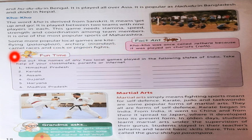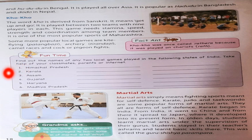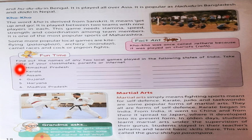Now the fun time. Find out the names of any two local games played in the following states of India. Take help of your classmates, parents, or internet. Number 1: Himachal Pradesh, Number 2: Kerala, Number 3: Assam, Number 4: Gujarat, Number 5: Haryana, and Number 6: Madhya Pradesh. Students, you have to write about two local games played in the given states. This is your homework — try to do it by yourself. If you still do not understand, then I will help.